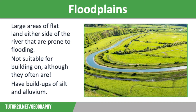Let's finish off the video by thinking about how floodplains form. Floodplains are large areas of flatland either side of the river that are prone to flooding on a regular basis. They are not suitable for building on, although they are often developed on. Floodplains are wide because the valley floor has been eroded outwards by migrating meanders — as they move downstream, they cut a wider and wider valley. Each time the river floods, it covers the land close to it with deposits of silt and alluvium, which are left behind once a flood recedes, filling up the floodplain and making it slightly higher each time.